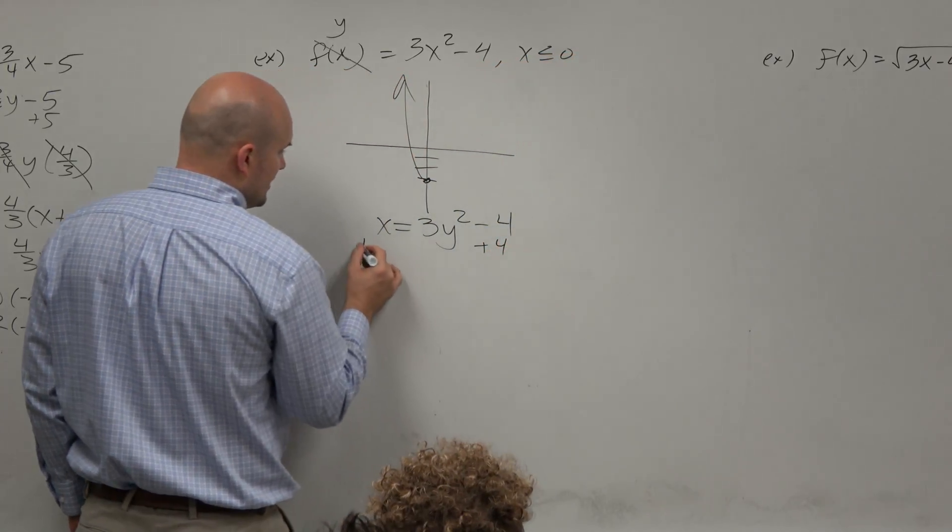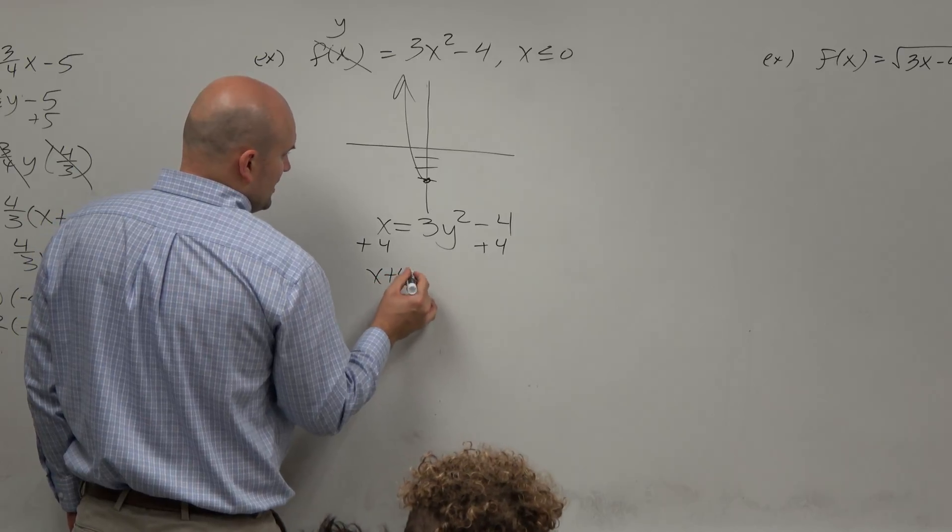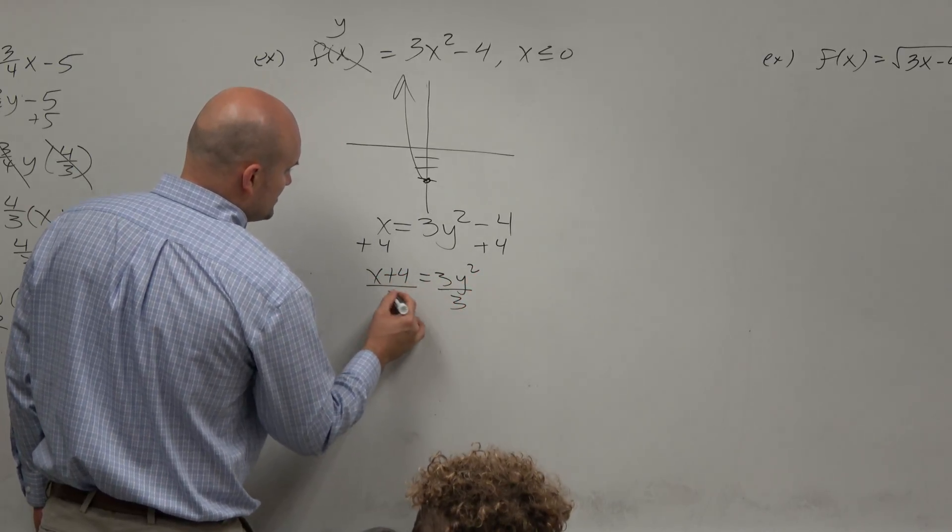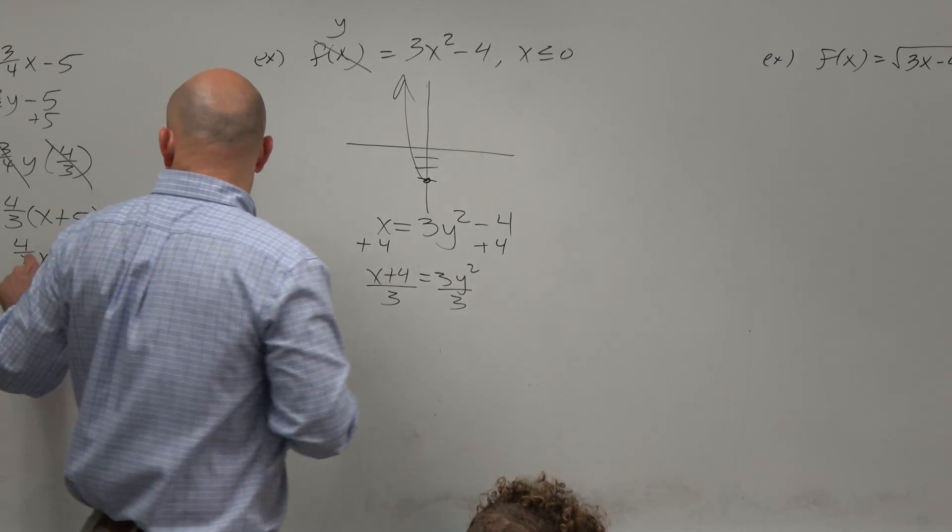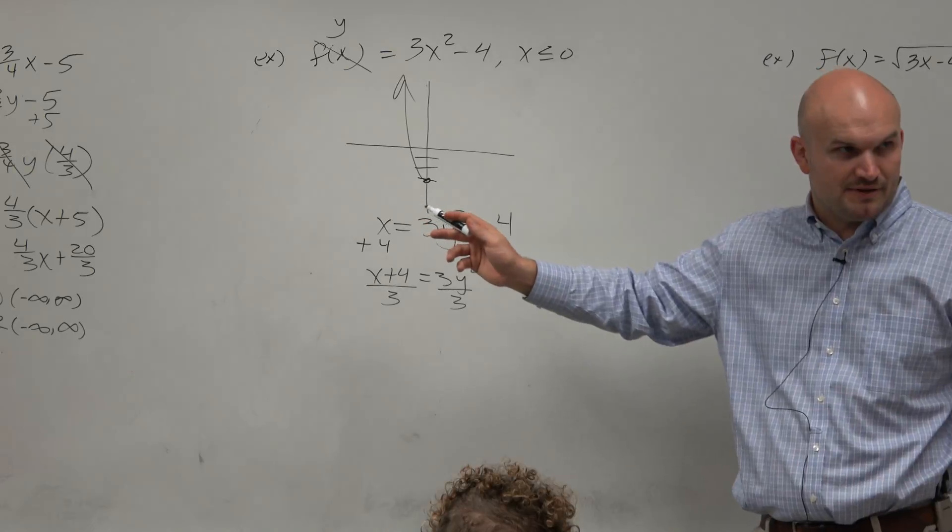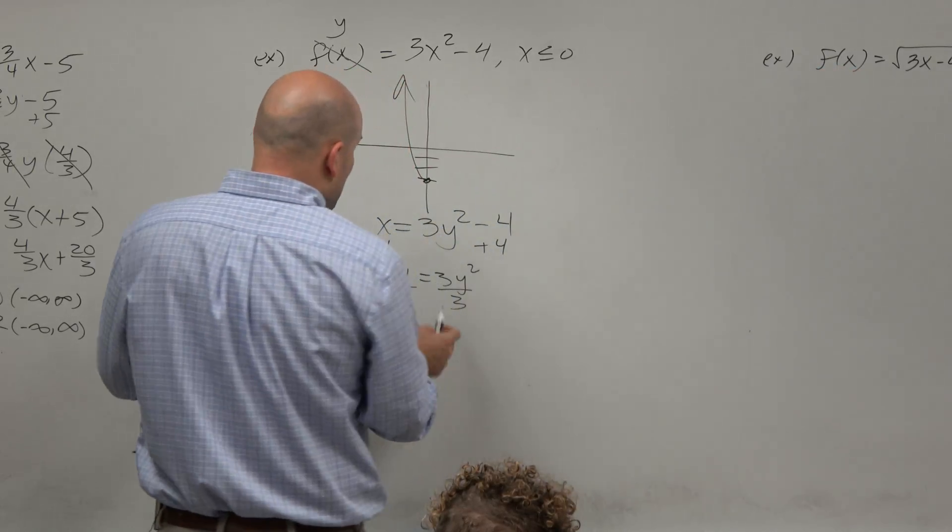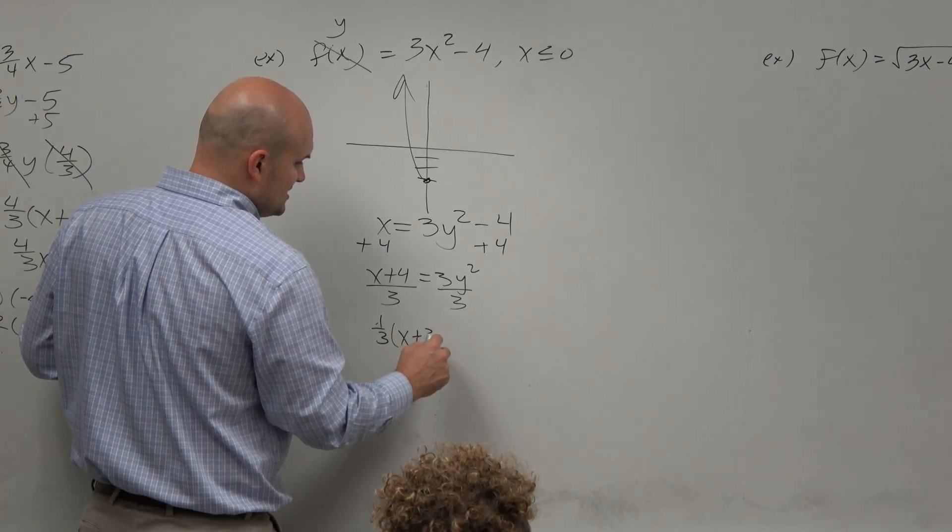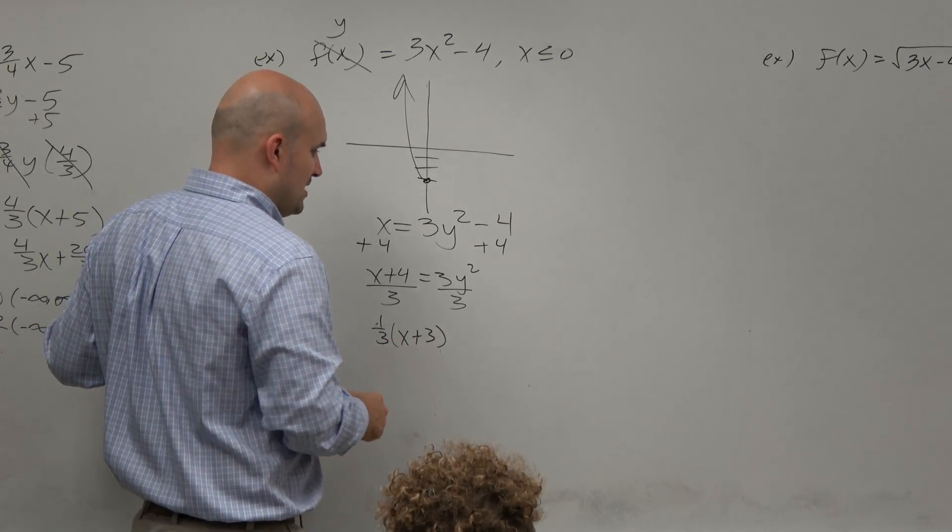So you add the 4. x plus 4 equals 3y squared. Divide by 3. Well, guys, over here we had to multiply the 4 thirds times both. Don't we have to divide both of those by 3? Yes? I'm going to prefer to leave the 1 third on the outside, though. Instead of divide by 3, I'm going to rewrite it as multiplying by 1 third.